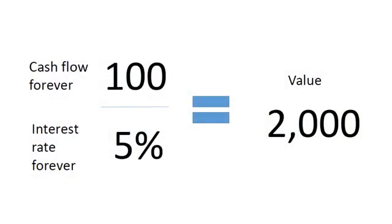If we can go to my first slide. What I show here is a very basic valuation model — probably the simplest valuation model there is. It assumes there's a company generating 100 units of cash flow and that interest rates forever are 5%. The reason we use 5% is because generally interest rates on average over history have averaged somewhere between 3% and 5%. You take 100 and divide it by 5%, you have a value of 2,000 units.